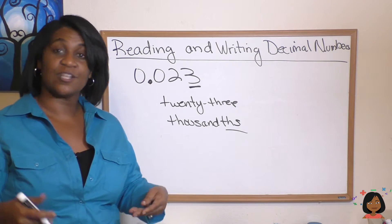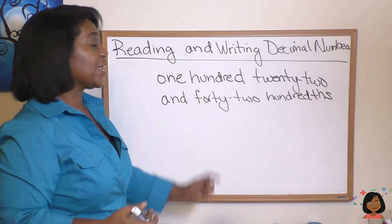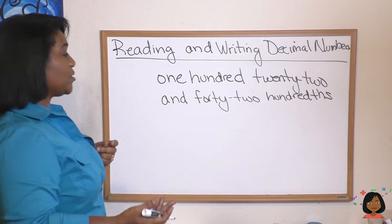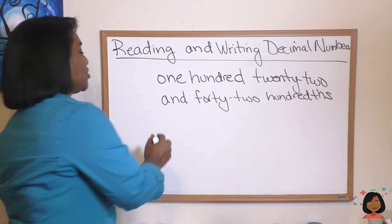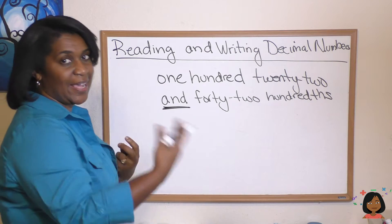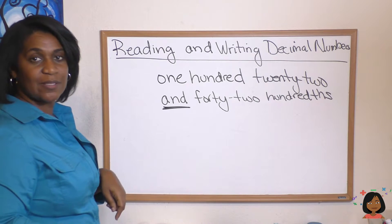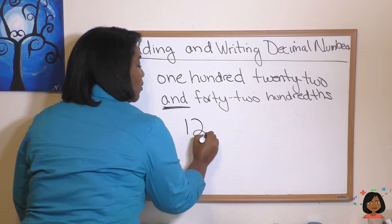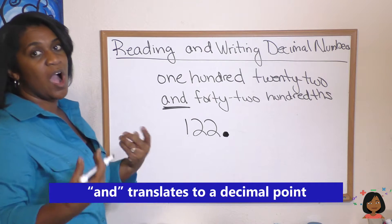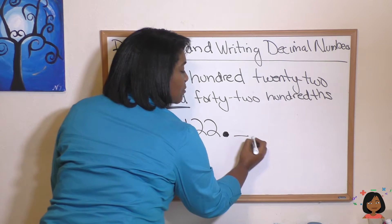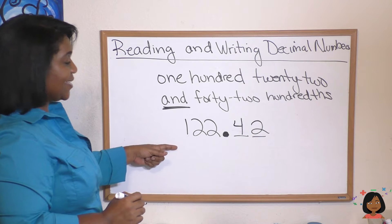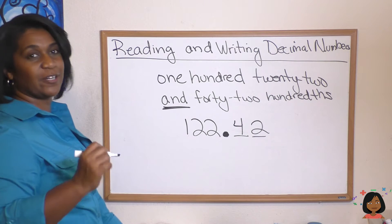The final thing I want to show you is how we take the written word and write a decimal from it. Let's look at '122 and 42 hundredths.' The word 'and' tells us we have a whole number and a decimal. So we write 122, and 'and' relates to the decimal point. For 42 hundredths, we know we're going out to the hundredths place, and we put in our 42. So this is how you write the decimal for 122 and 42 hundredths: 122.42.